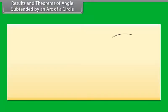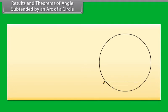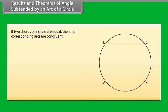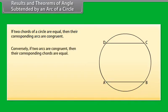Results and theorems of angles subtended by an arc of a circle. The relation between the chord of the circle and the arc is that if two chords of a circle are equal, then their corresponding arcs are congruent. Conversely, if two arcs are congruent, then their corresponding chords are equal.